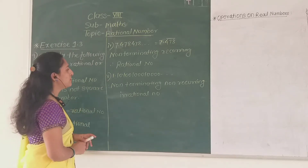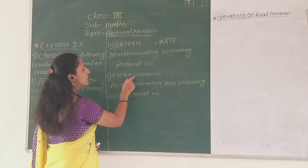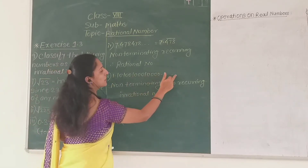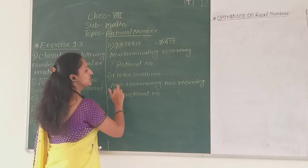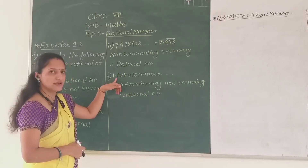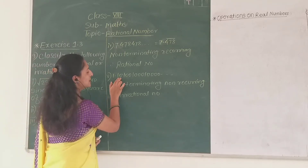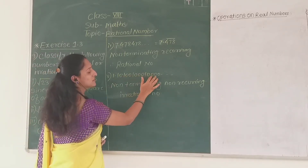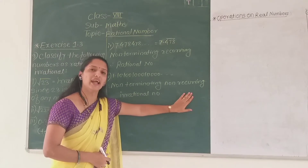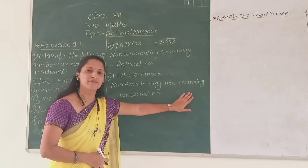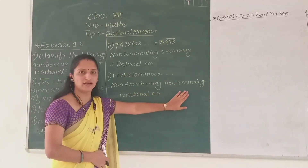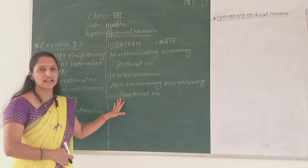Now the last example is 1.10, 100, 1000, 10000... and so on. For this decimal expansion, the digits continue, meaning it is non-terminating. But look here — we do not get the same repeating block of numbers. The first group is 10, then 100, then 1000, then 10000, and so on. That means this decimal expansion is non-terminating and non-recurring. This is the decimal expansion of an irrational number, since the decimal expansion of an irrational number is non-terminating and non-recurring. Therefore, this number is an irrational number.